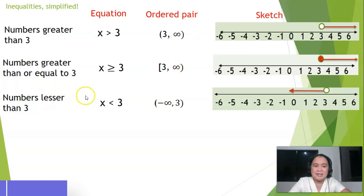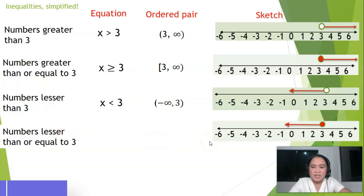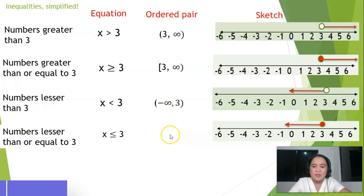Numbers lesser than or equal to three: sketch a closed circle extending to the left of three. The equation equivalent is x is lesser than or equal to three. The interval equivalent has negative infinity as the leftmost value and three as the rightmost — three is included, so it uses a bracket: negative infinity comma three bracket.